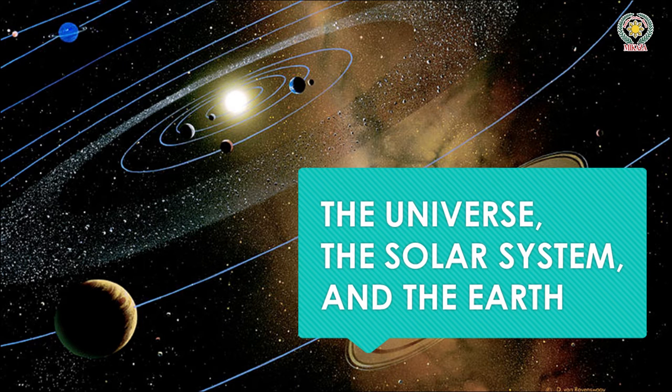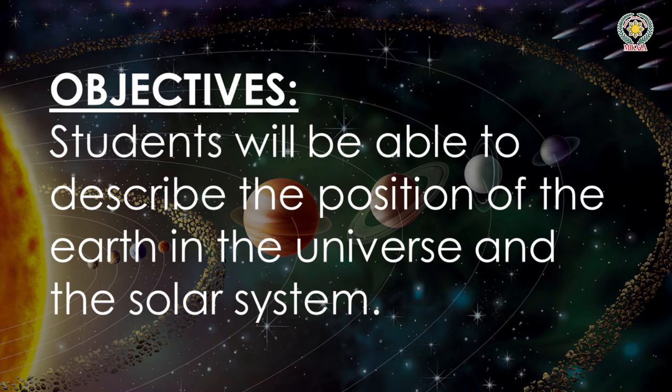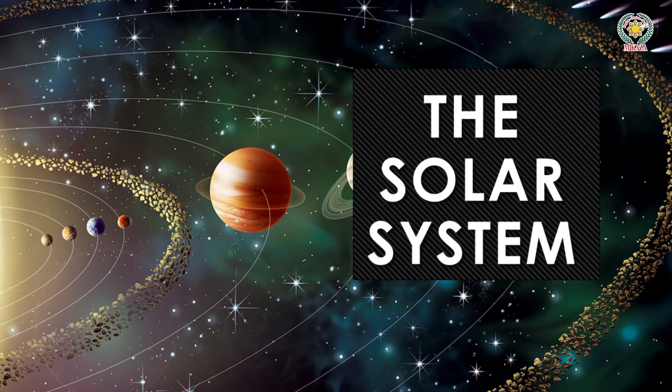It's only a matter of your thinking, so make sure that you are ready always to learn. Our Chapter 12 is about the universe, the solar system, and the earth. But this time we're going to talk about the solar system and the earth. The main objective is to describe the position of the earth in the universe and the solar system. Now let's take a look at the second slide.